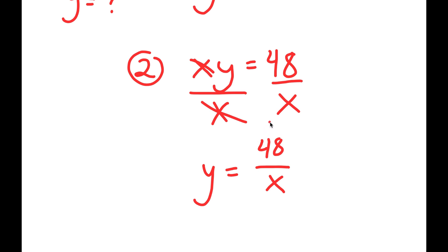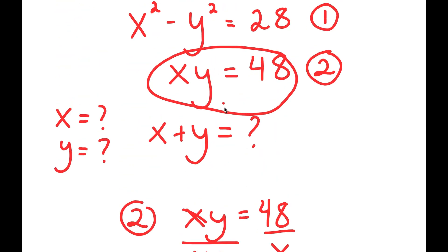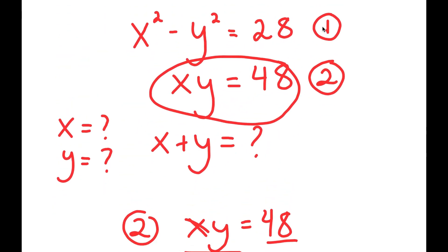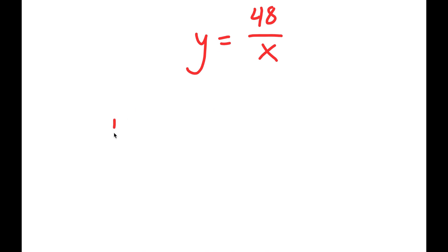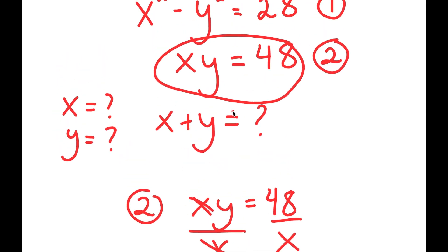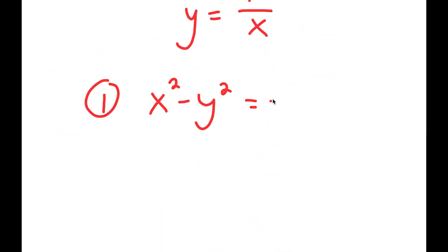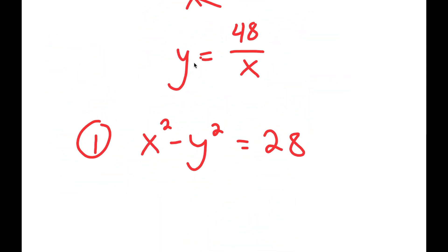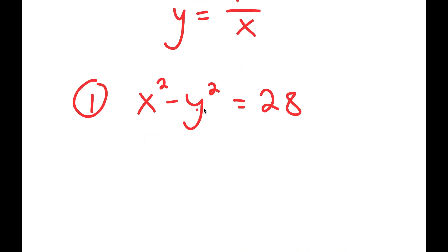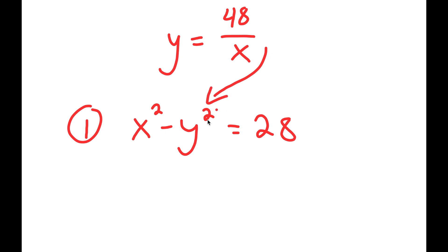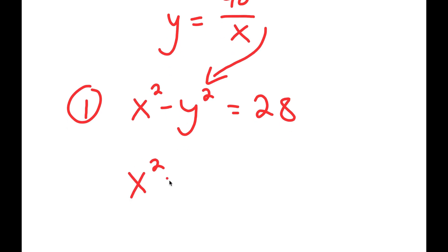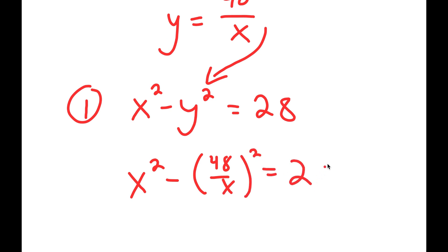Now using this equation, I can plug this back into equation one. Equation one is x squared minus y squared is equal to 28. We have y is equal to 48 over x, so if I plug this in for y, I get x squared minus 48 over x, all squared, is equal to 28.